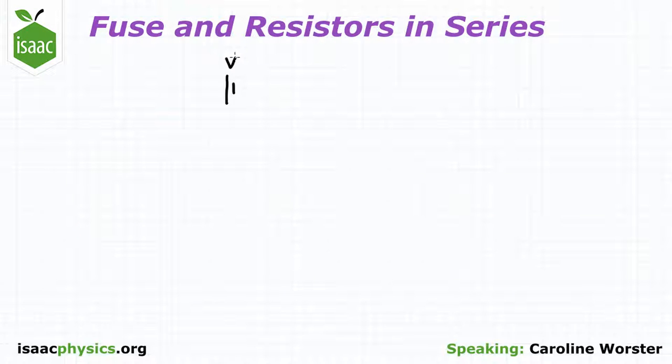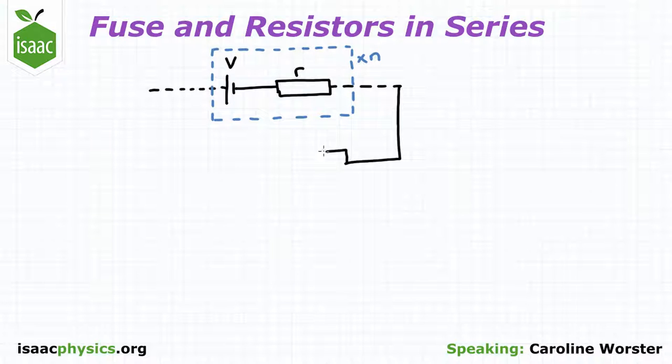Here we have a setup of a cell of voltage V in series with a resistor of resistance little r, and this is repeated n times. This is in series with another resistor of resistance capital R.